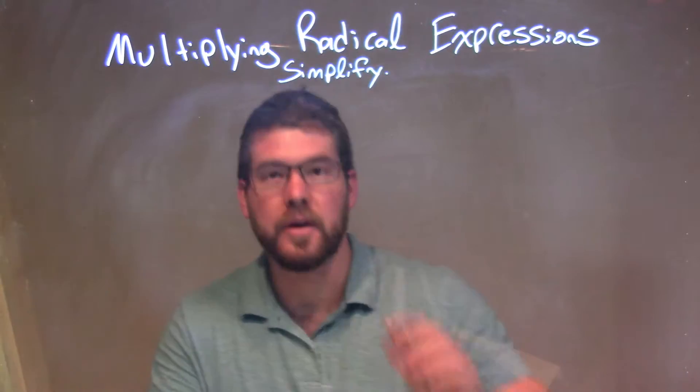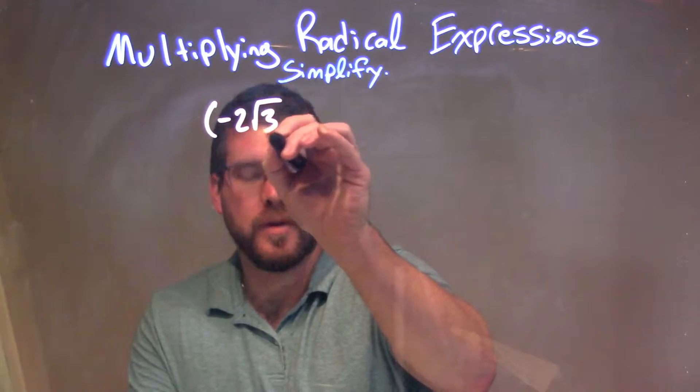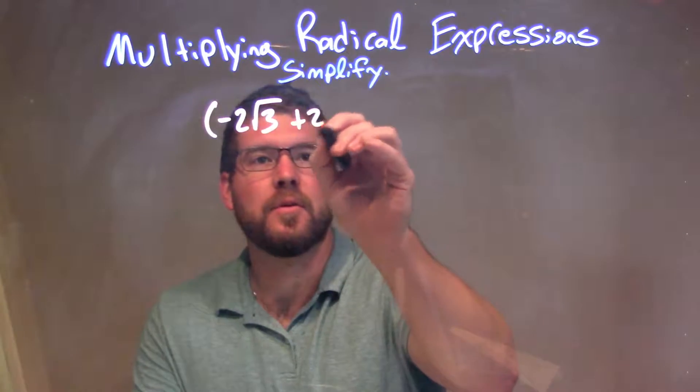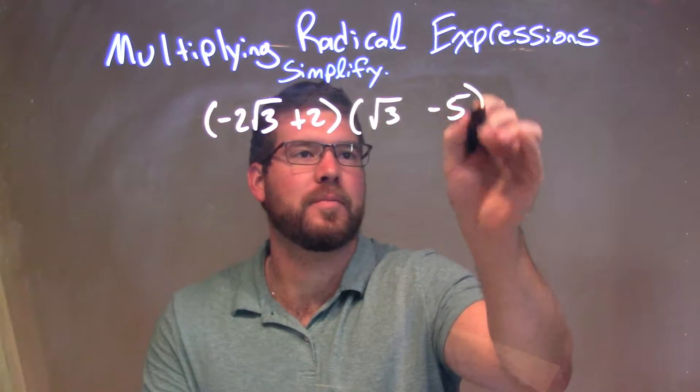So if I was given this expression here, negative 2 square root of 3 plus 2, times the square root of 3 minus 5.